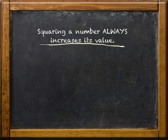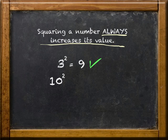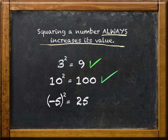Or how about this statement? Let's see. Kinda seems true. If you square three, you get nine. That's an increase. If you square ten, you get a hundred. If you square negative five, you get twenty-five.